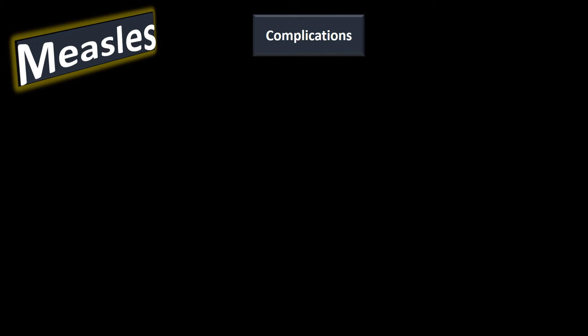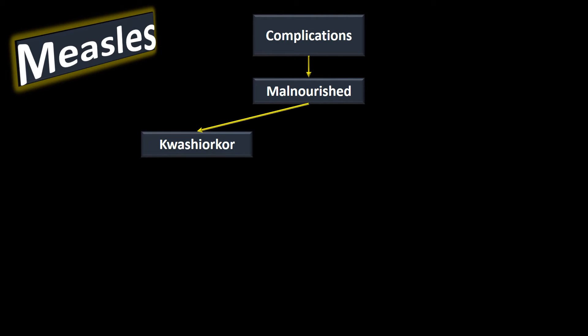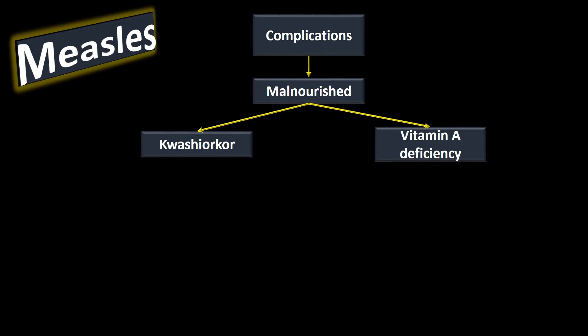Other complications, especially in the developing world, stem from malnourishment. Somebody who is malnourished is at risk for kwashiorkor — a disease related to protein deficiencies — and measles can worsen that condition. Another complication involves vitamin A deficiency. Since vitamin A is essential to vision, someone with a vitamin A deficiency who contracts measles can go blind. This is actually a leading cause of blindness in the developing world.